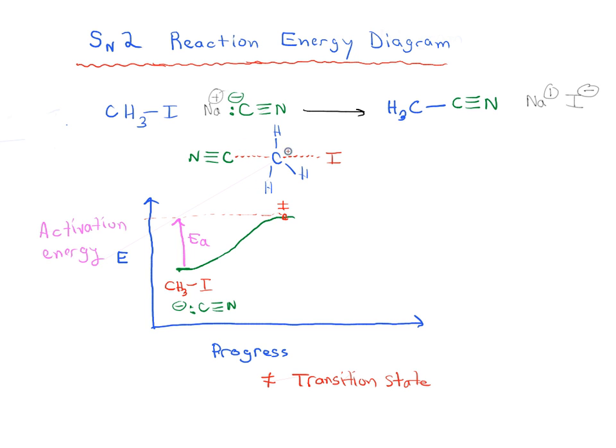Sort of because they're not full bonds. These are dashed, meaning that they are partial bonds. They are not quite full bonds. Because they're partial bonds, this is a very unstable system. This is why the energy of this is so high.